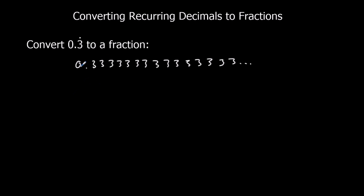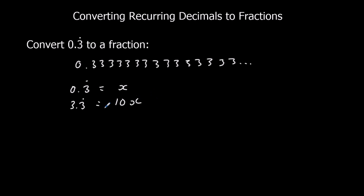So here I've got 0.33333, and I'm going to call that x. Then what I'm going to do is find something else that ends in 3s going on forever. All I've got to do is multiply it by 10, so that gives 3.3 going on forever. So I've got x, which is 0.3 going on forever, and 10x, which is 3.3 going on forever.